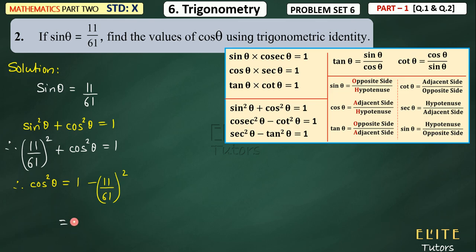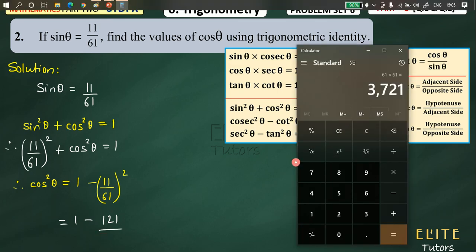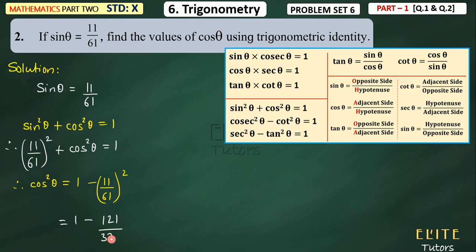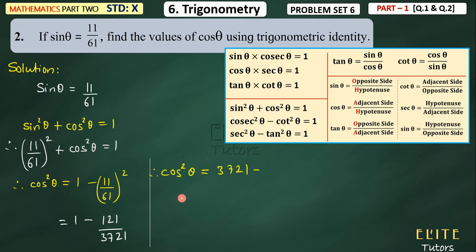Which means you have to square both. So which is equal to 1 minus 11 squared upon 61 squared. You will find 11 squared is 121 and 61 squared is 3721. So cos square theta is equal to — cross multiplication gives 3721 upon 3721 minus 121 upon 3721 — which is (3721 minus 121) upon 3721. So 3721 minus 121 is 3600. So cos square theta equals 3600 upon 3721.